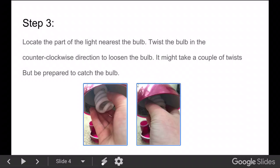Step 3, locate the part of the light nearest the bulb. Twist the bulb in the counterclockwise direction to loosen the bulb. It might take a couple of twists,